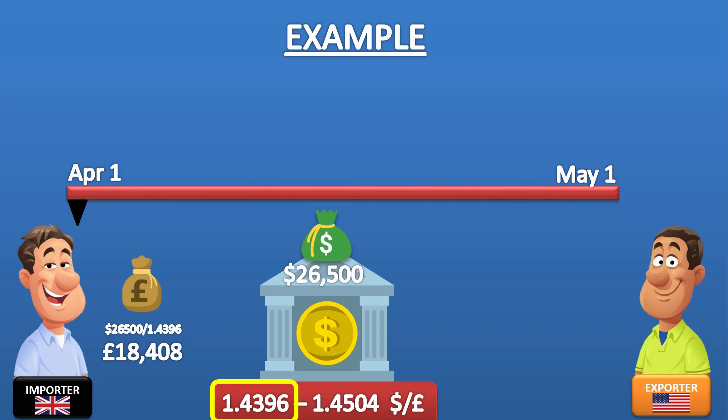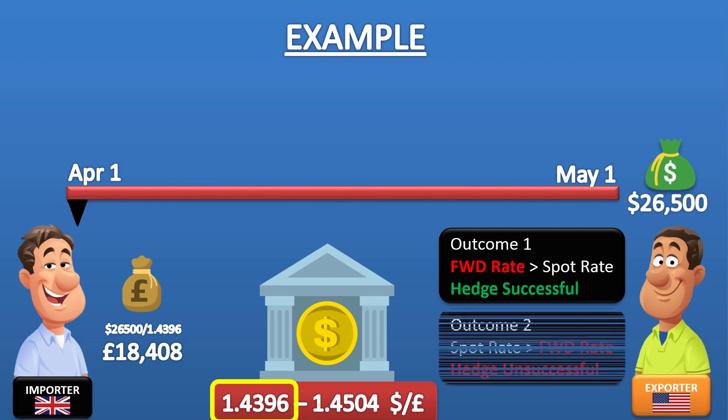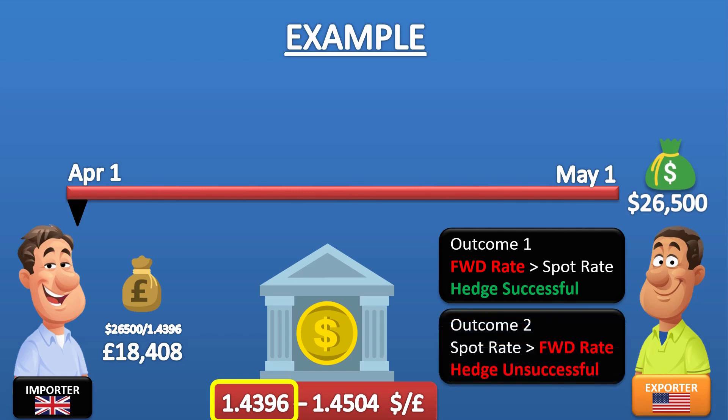Let's see the outcomes on the 1st of May. If the spot rate is lower than 1.4396 on the 1st of May, the importer would have successfully protected themselves against a fall in the value of the pound, and would have avoided paying more pounds at the spot rate to obtain the dollars. If the spot rate is higher than 1.4396 on the 1st of May, the importer would pay more at the forward rate than if they had obtained the dollars at the spot rate on the 1st of May. You cannot avoid this extra cost because a forward contract is binding.